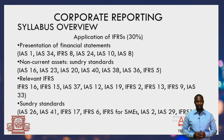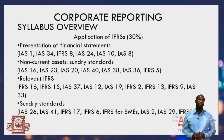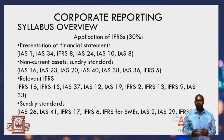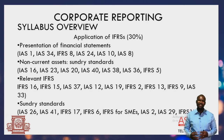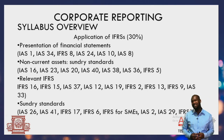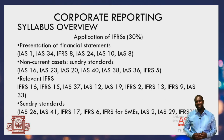Then we move to the sundry standards relating to non-current assets. These standards are relevant from earlier levels but are now examined in a more serious context for corporate reporting. We shall look at IAS 16 for property, plant and equipment; IAS 23 for borrowing costs; IAS 20 for government grants — both revenue and capital grants; IAS 40 for investment property held for rental or capital appreciation; IAS 38 for intangible assets; IAS 36 for impairment loss; and IFRS 5 for disclosing assets held for sale within a single accounting period, including discontinued operations.